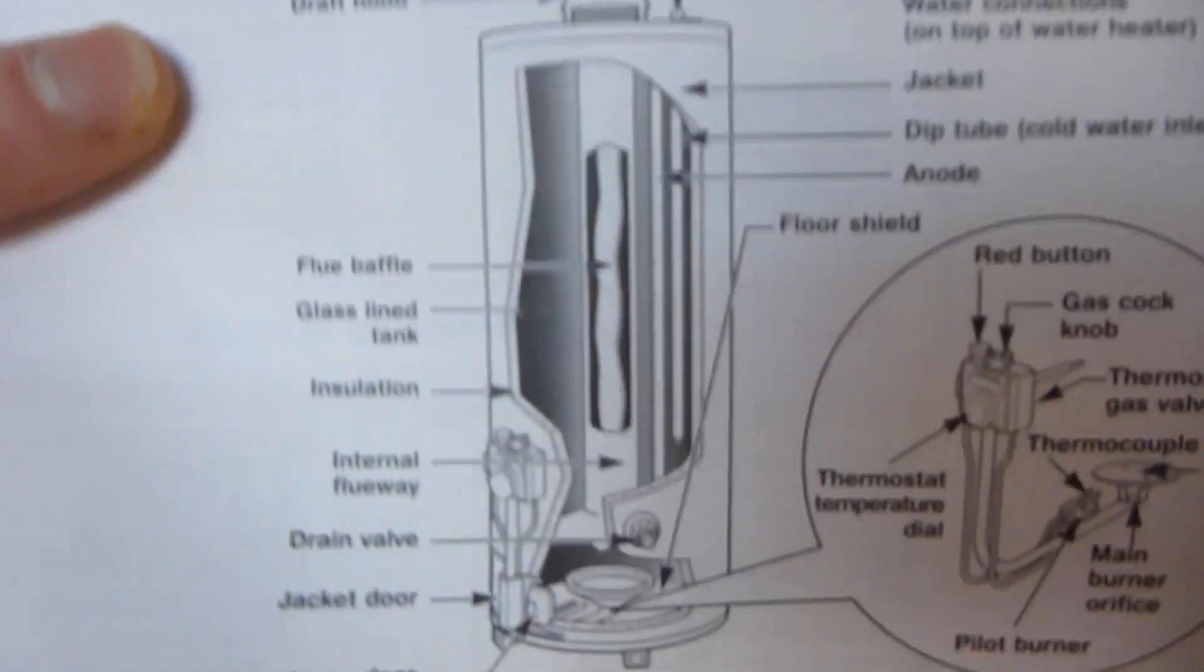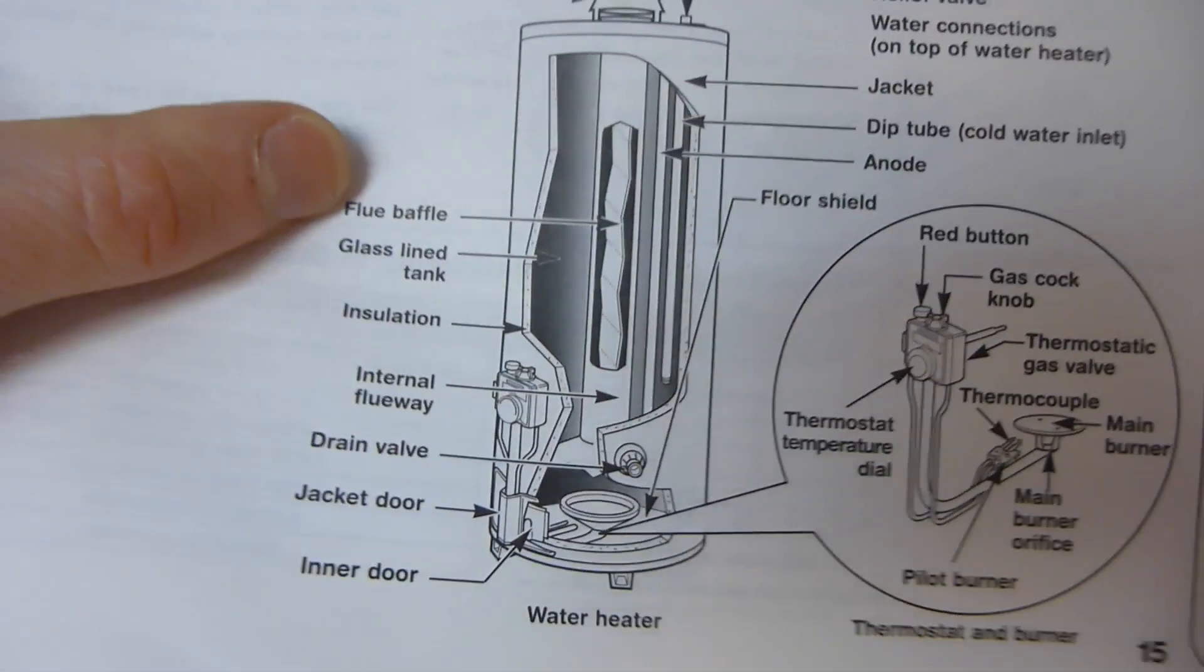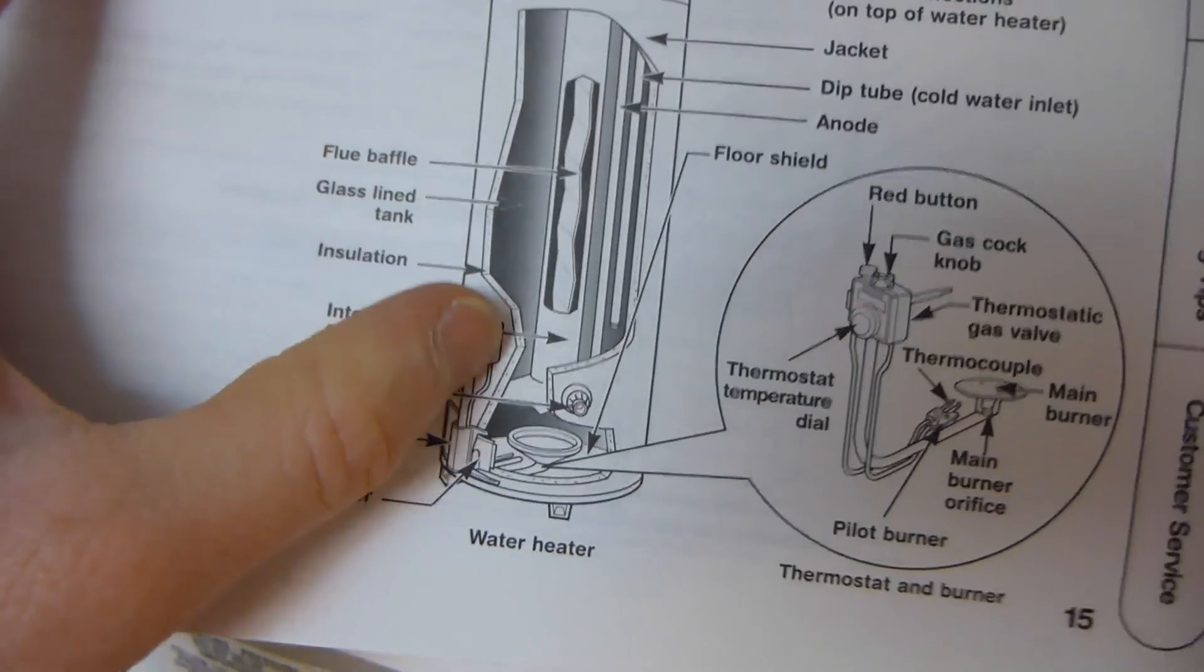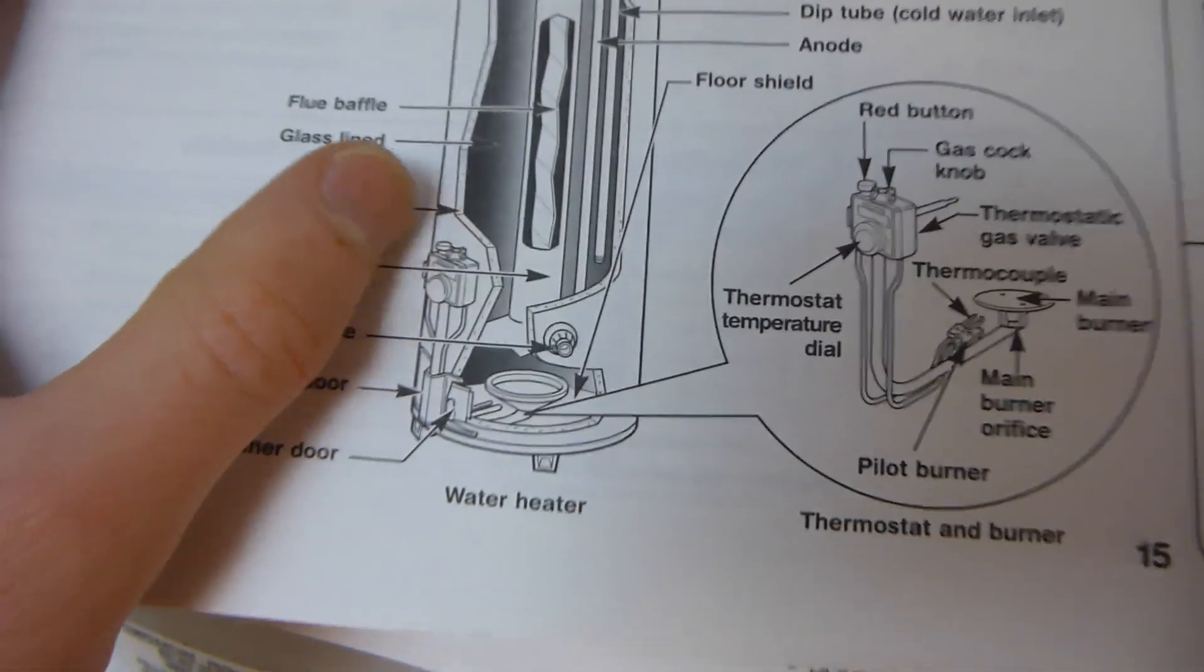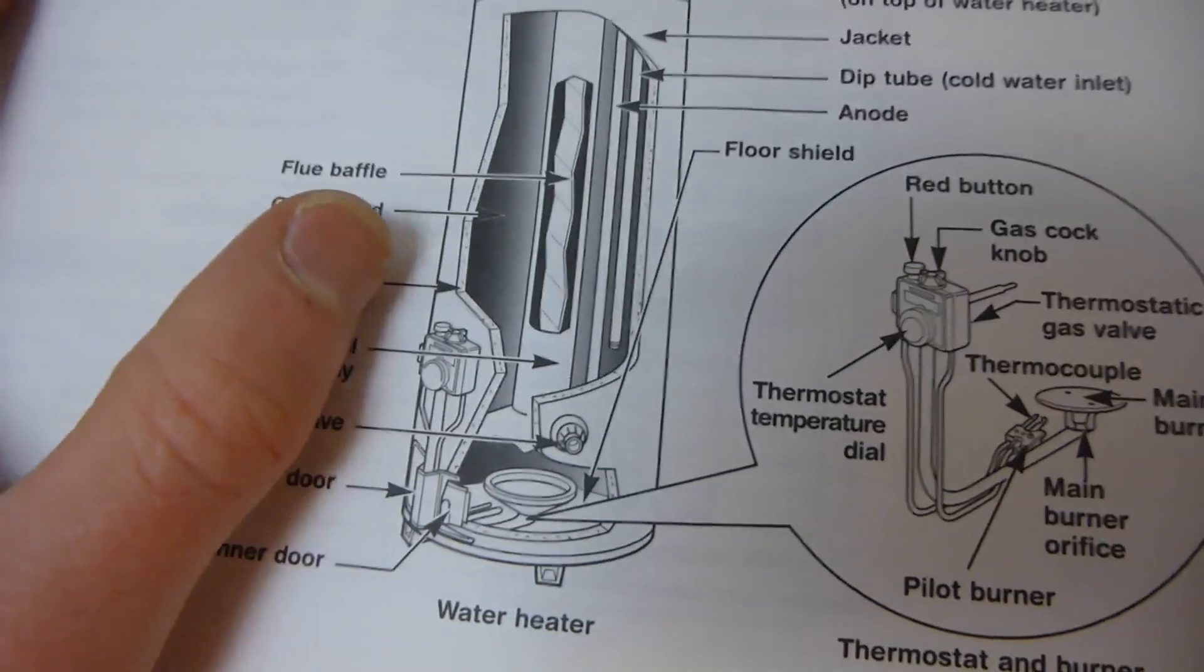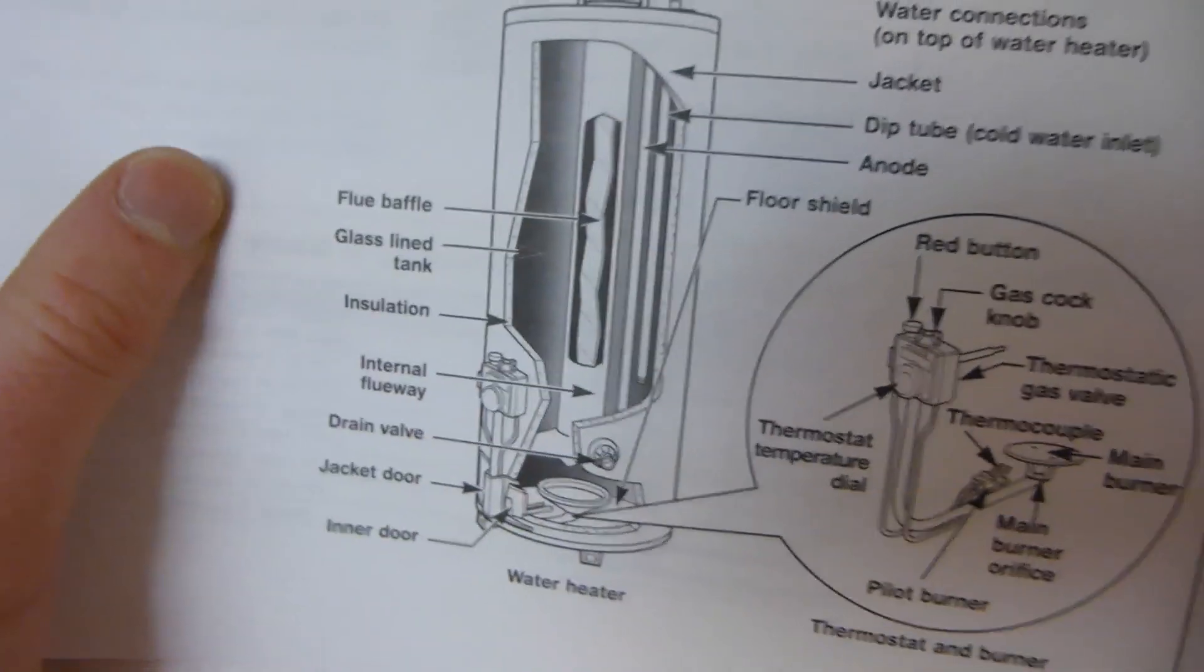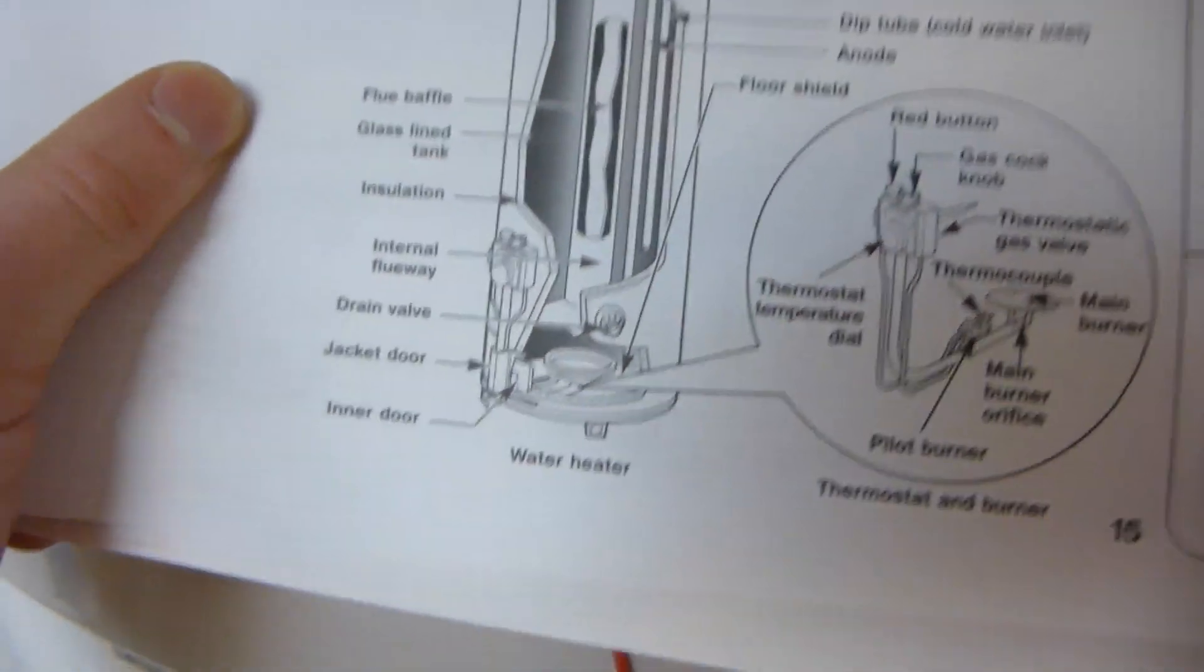I was actually just looking at the manual. And. There's actually a baffle inside the flue. In inside the internal flue. To make it more efficient. To kind of get all of the flue gas to touch the sides. To try to cool it off as much as possible. To make it more efficient.